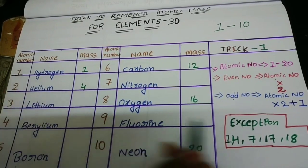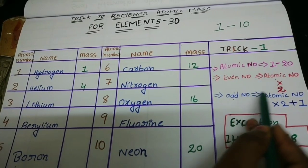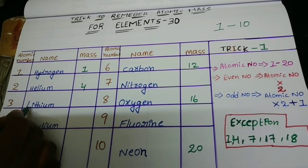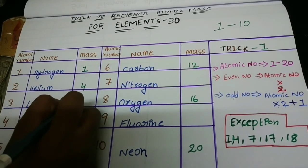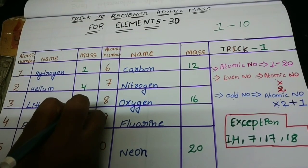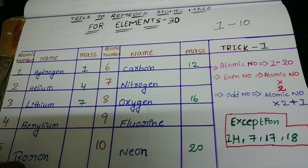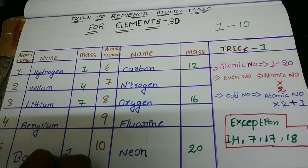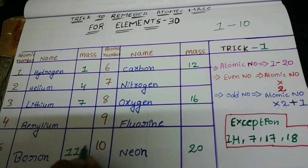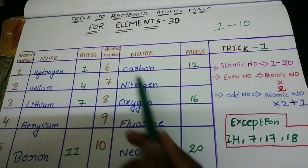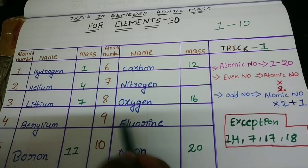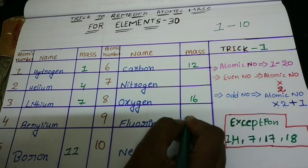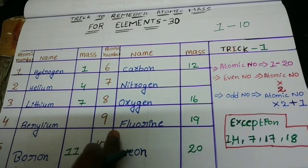Next let's do the odd numbers. For odd numbers, multiply atomic number by 2 and add 1. Lithium has atomic number 3: 3 × 2 = 6, 6 + 1 = 7. So 7 is the lithium atomic mass. For boron, atomic number 5: 5 × 2 = 10, 10 + 1 = 11. 11 is the boron atomic mass. Nitrogen is an exception. For fluorine, atomic number 9: 9 × 2 = 18, 18 + 1 = 19. 19 is the fluorine atomic mass.